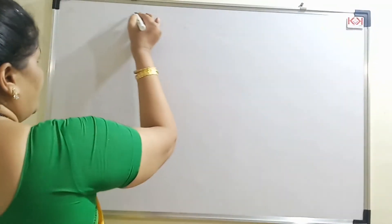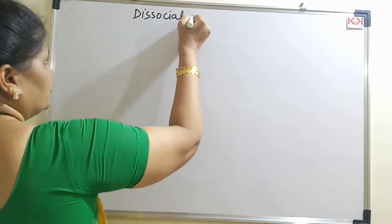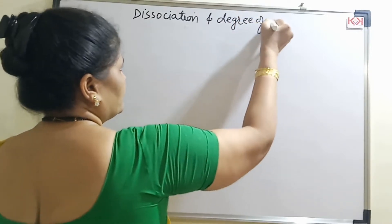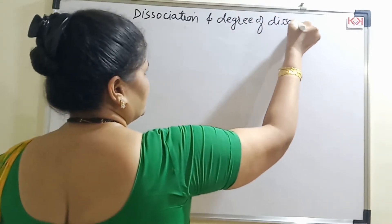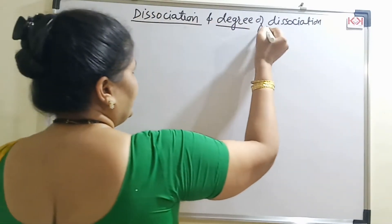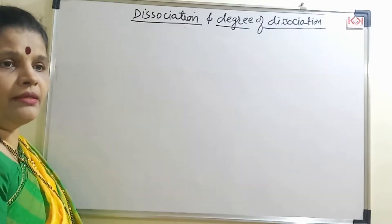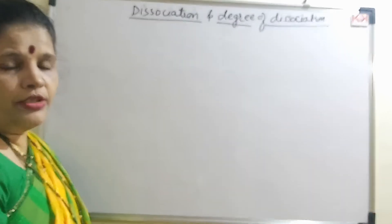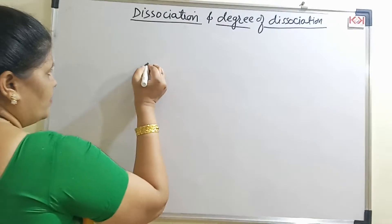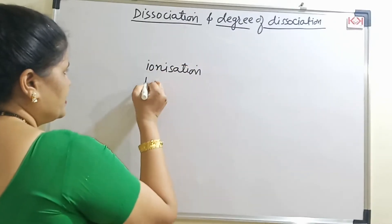In this video, we are going to see what is dissociation and degree of dissociation. To understand this, the two very important terms we are dealing with throughout the chapter are: the first term is ionization and the second is dissociation.